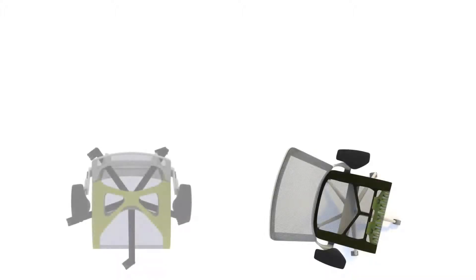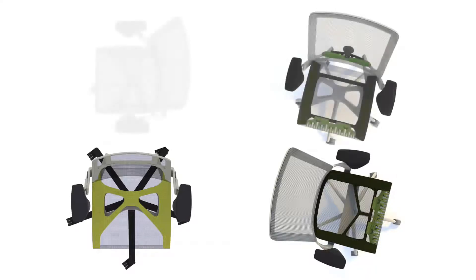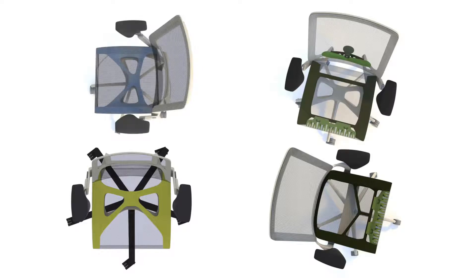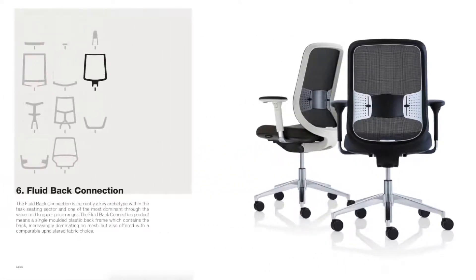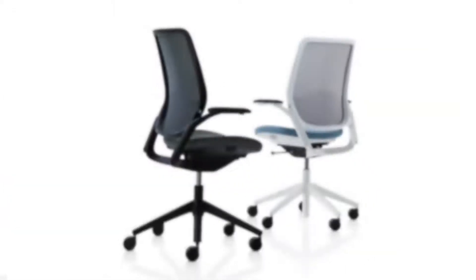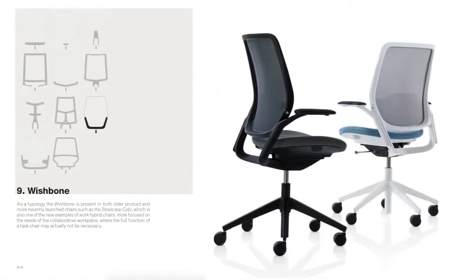So Curran originates from this. Each task chair we develop has a distinct design personality, and as with the other key assets — the mechanism, the chair's functional attributes, the materials, the performance range, the price point, and so on — Do, our most successful chair today, has a fluid back connection architecture, and our previous chair was created within the wishbone architecture.